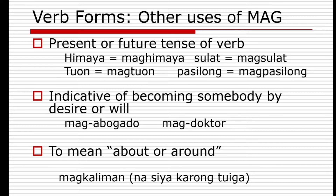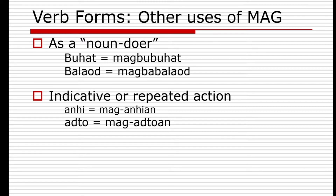'Mag' can also mean 'about' or 'around' a quantity — for example, 'magkalim-an na siya karong tuiga' means he is going to be about 50 years old this year. As a noun doer, 'mag' combined with a root word refers to the one who performs an action — 'magbuhat' means creator or maker of a thing. We often use 'magbuhat' when referring to God. 'Balaod' means law, and 'magbabalaod' refers to lawmakers or legislators.